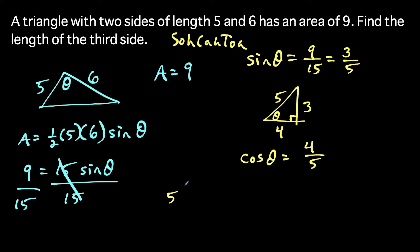So we could write out this equation, we have five squared plus six squared, minus two times five times six, times cosine of theta is equal to the side opposite of theta, we'll call that c, is equal to c squared.